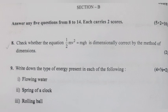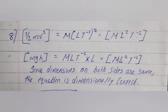Question 8: Check whether the equation 1/2 mv² = mgh is dimensionally correct by the method of dimensions. Answer: 1/2 mv² is equal to